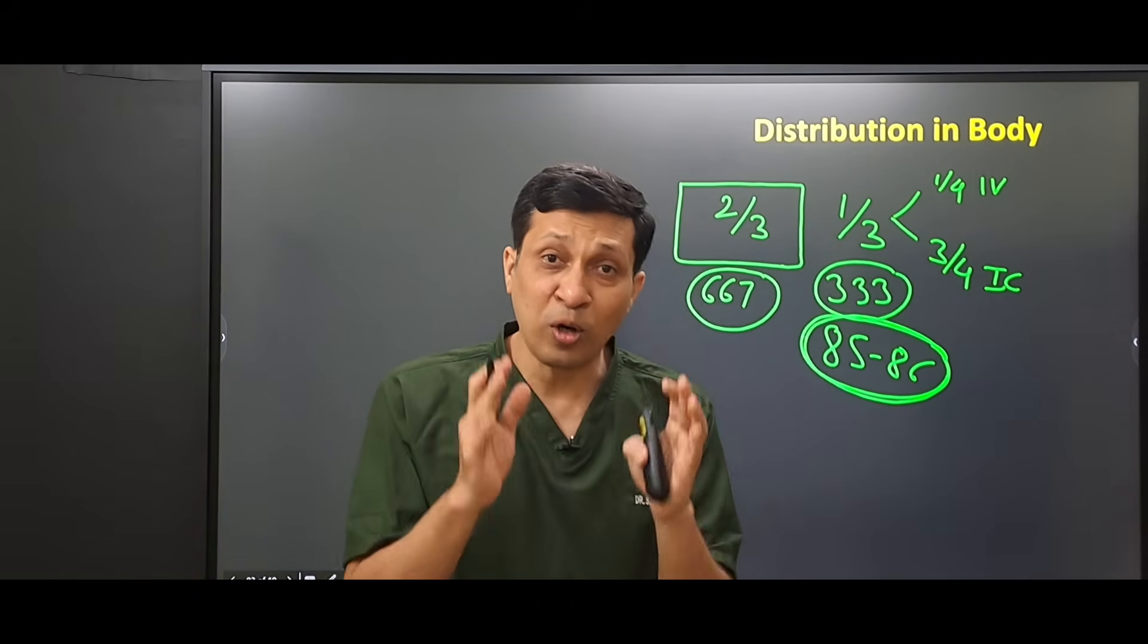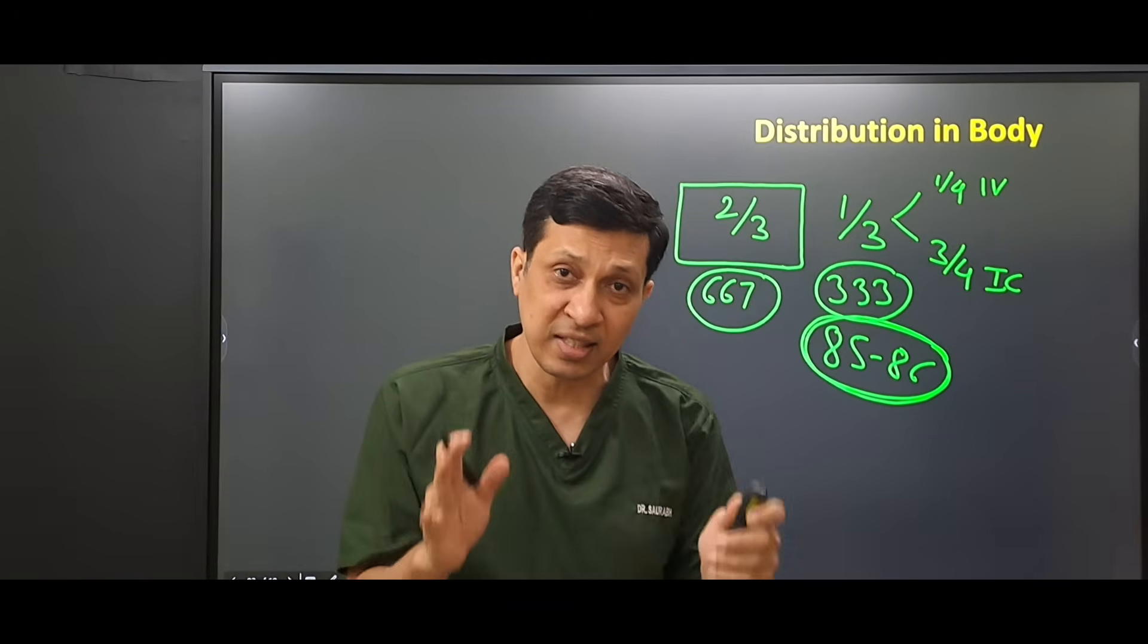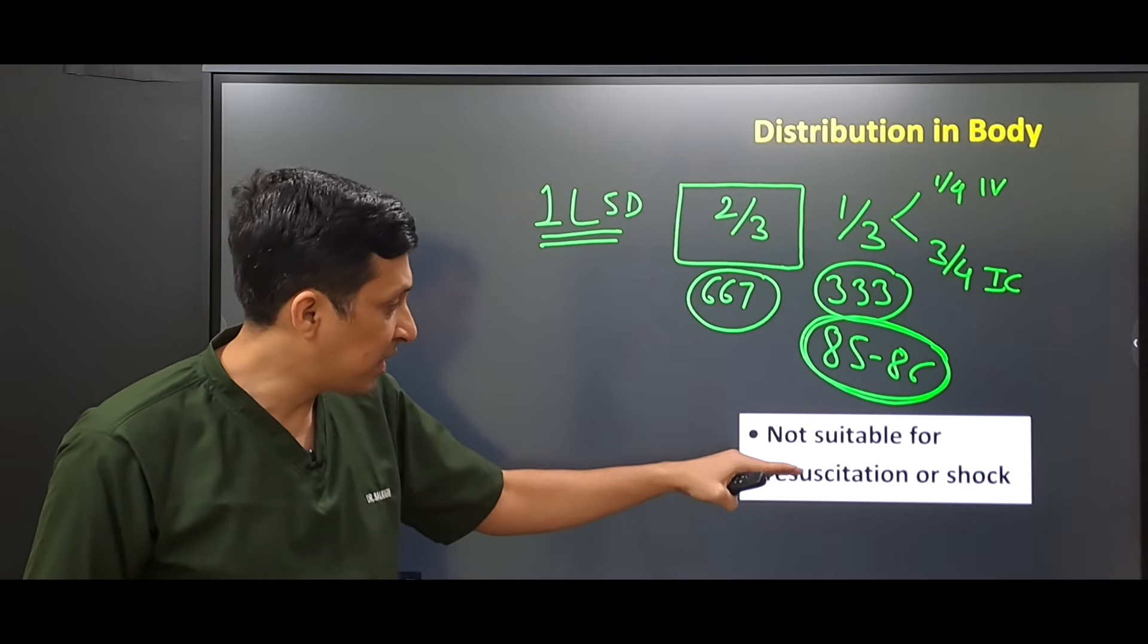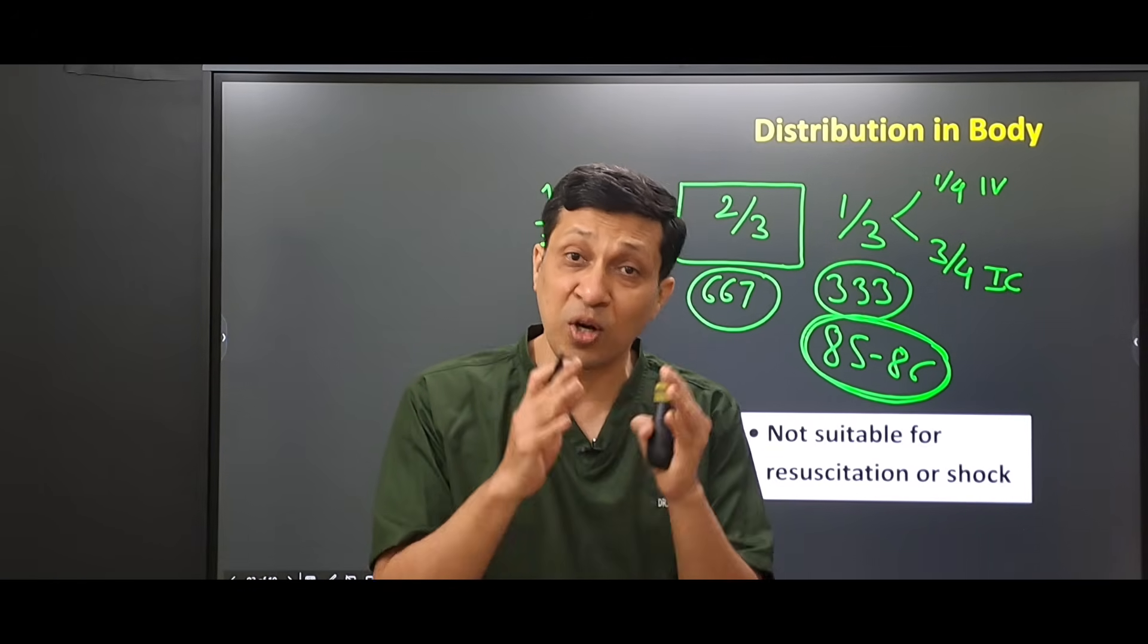So when 1 liter of 5% dextrose is given to a patient, only about 85 to 86 ml of fluid stays in the blood. The blood volume is increased by only 85 to 86 ml, and that is the reason this dextrose 5% is not suitable for resuscitation or in cases of shock.